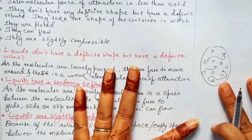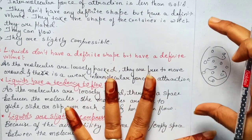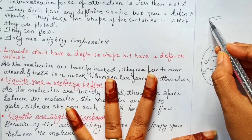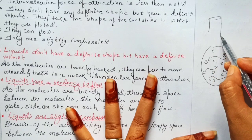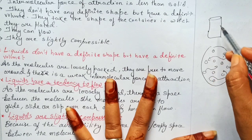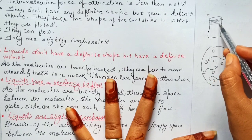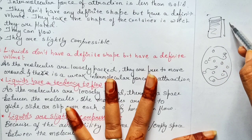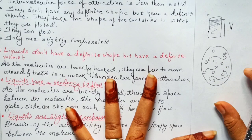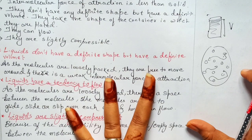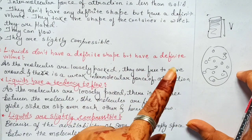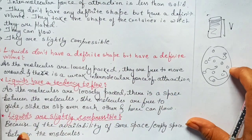Why will they have a definite volume? Obviously, if we place them in any container — say I have a container here and I fill the liquid in it — from one end to the other, the volume of liquid remains the same. So we say that liquids have a definite volume.